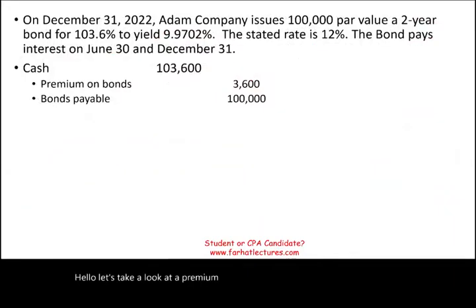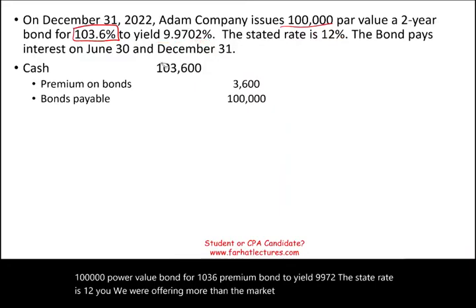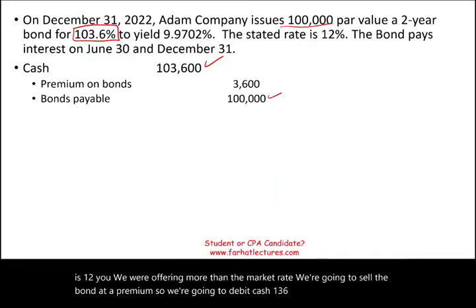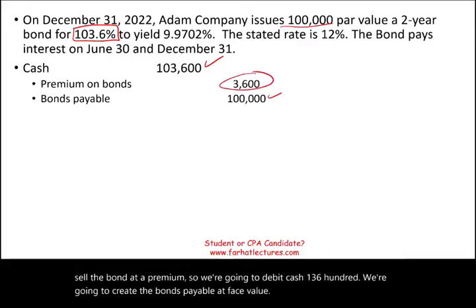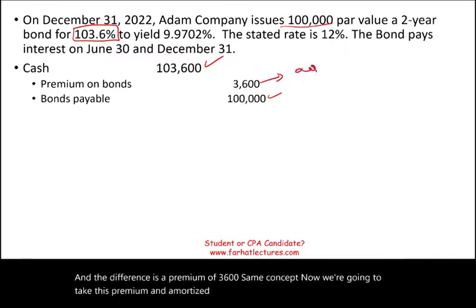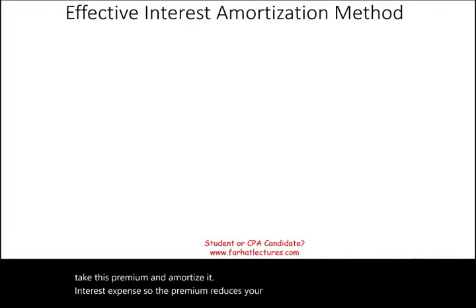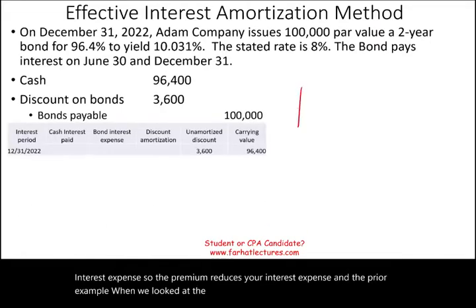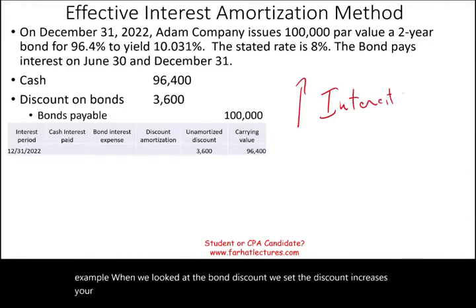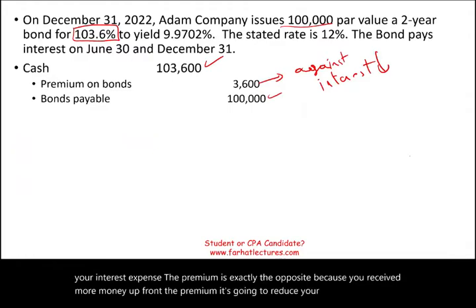Now let's take a look at a premium bond. On December 31st, Adam Company issued a $100,000 par value bond for $103,600 — a premium bond — to yield 9.9702%. The stated rate is 12%. Because we're offering more than the market rate, the bond sells at a premium. The journal entry is debit cash $103,600, credit bonds payable at face value $100,000, and the difference is a premium of $3,600. We'll take this premium and amortize it against interest expense, which reduces interest expense.